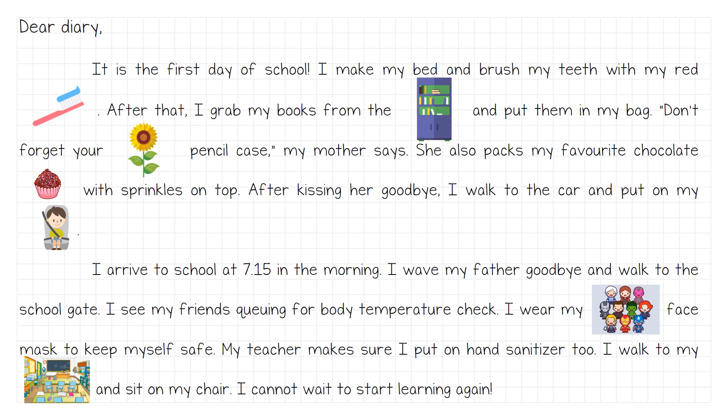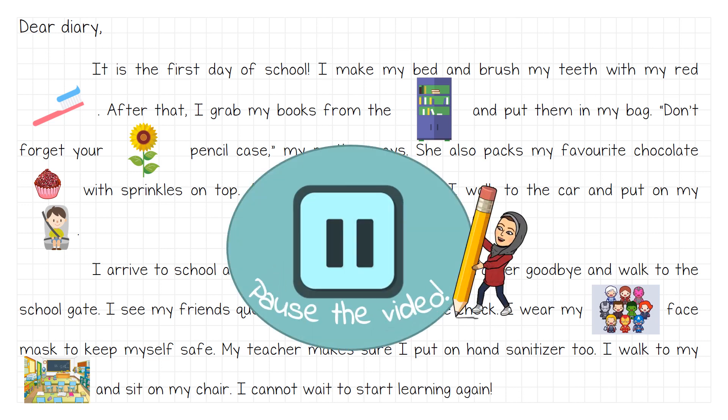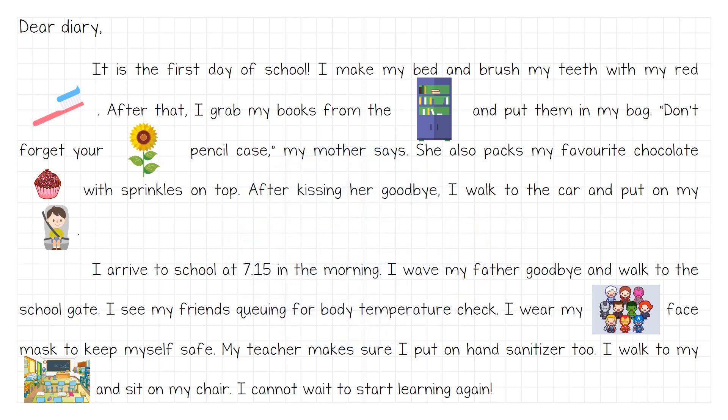Look at this diary. On this diary, you can see there are one, two, three, four, five, six, and seven pictures. Can you tell me what are the names of these pictures? These pictures' names are made from compound nouns. Read and try to find the answers — we can discuss them later. You can pause the video and try to figure out the answers.